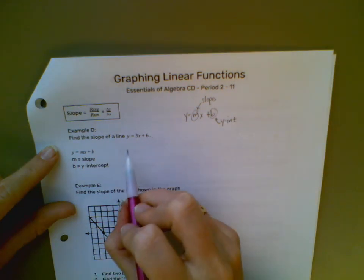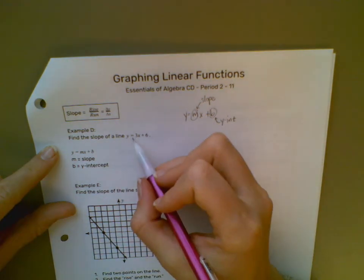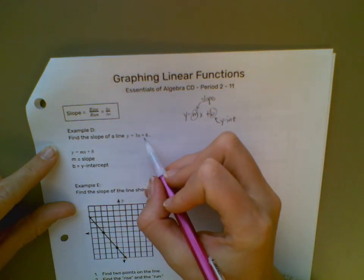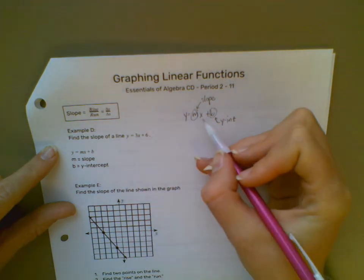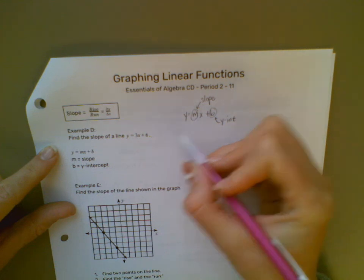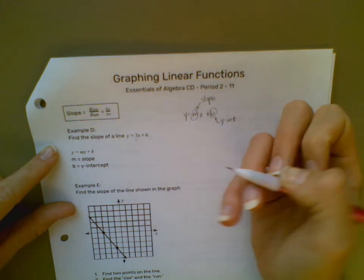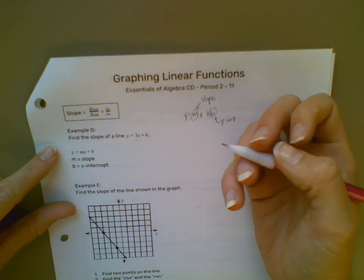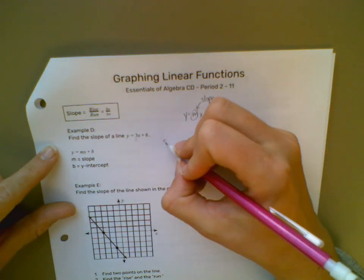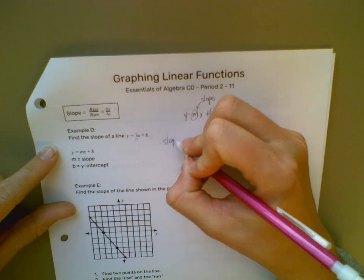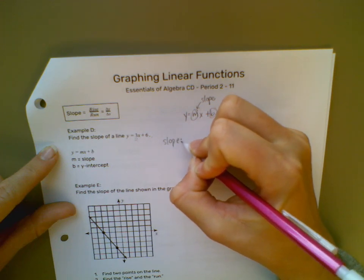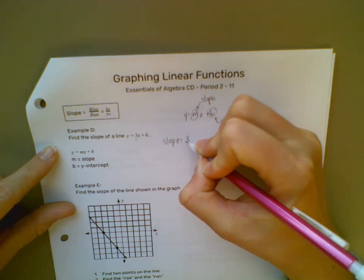So in this example, y equals 3x plus 6, we see that the coefficient of x is 3. So our slope will be 3.